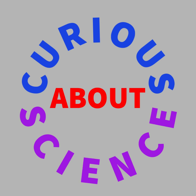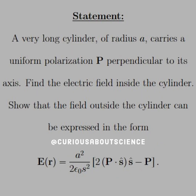Welcome back! Our statement today reads: a very long cylinder of radius A carries a uniform polarization P perpendicular to its axis. Find the electric field inside the cylinder, and show that the field outside the cylinder can be expressed in the form as seen here.